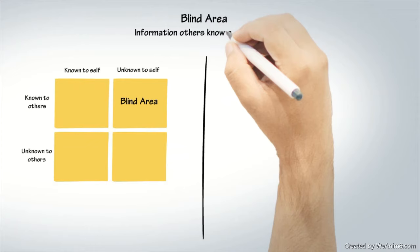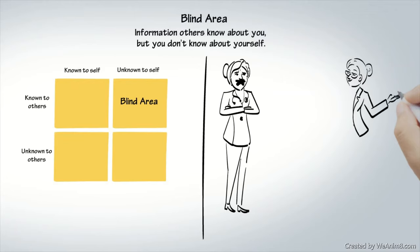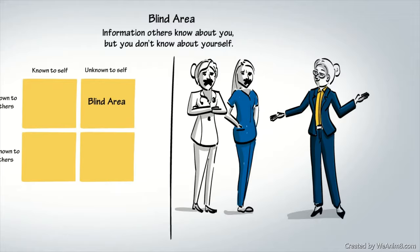Robin is not aware of her tendency to interrupt people and that she's perceived as a poor listener. The lower left quadrant is called the hidden area. This represents the things you know about yourself that others don't know about you.